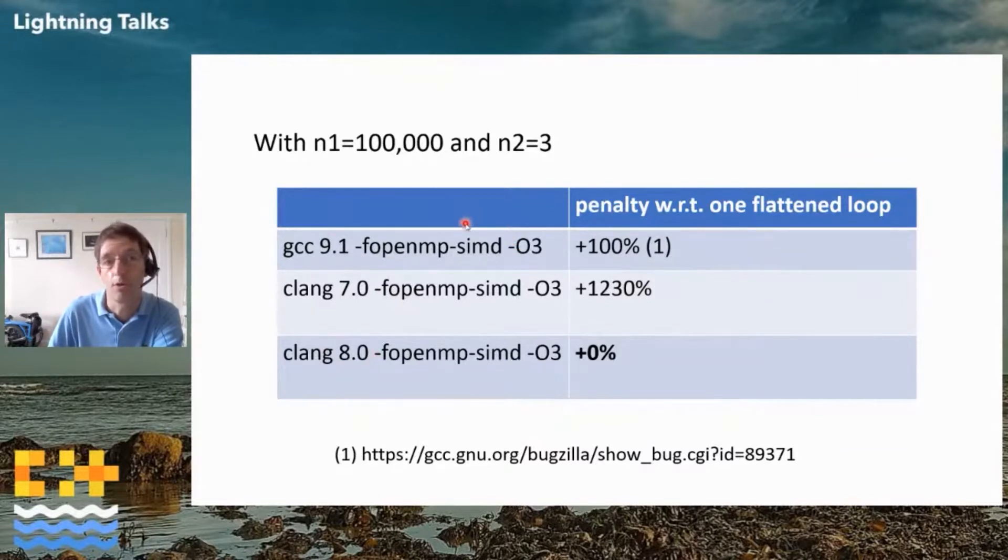Meanwhile, GCC does have a bug. It does collapse the loops but doesn't vectorize anything. There's actually a bug open which still hasn't been fixed. So there you go, I had no solution.